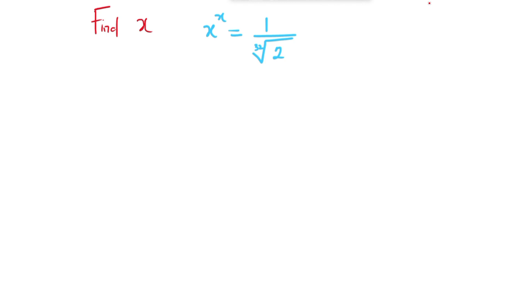Looking at this, we have 32 as our root. In solving this, we have that x raised to power x is the same thing as 1 over 2 raised to power 1 over 32, which is the same thing as x raised to power x equal to 2 raised to power negative 1 over 32, because finding the reciprocal puts this into negative exponent form.